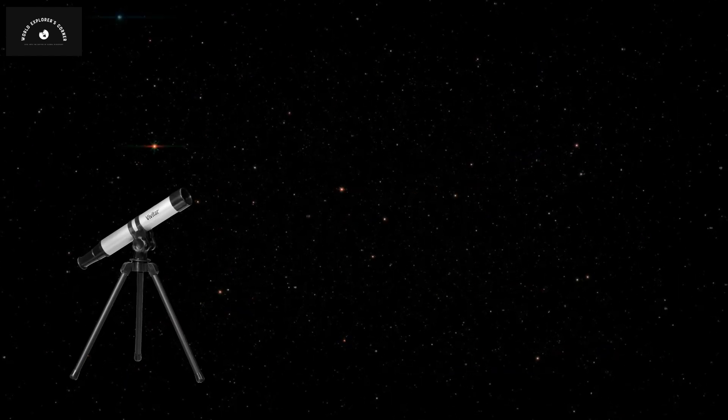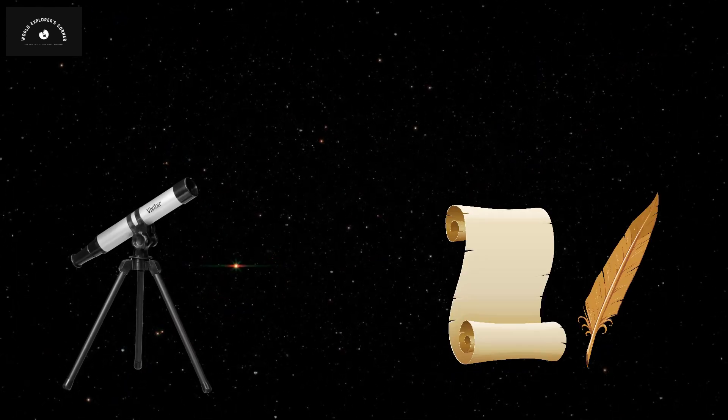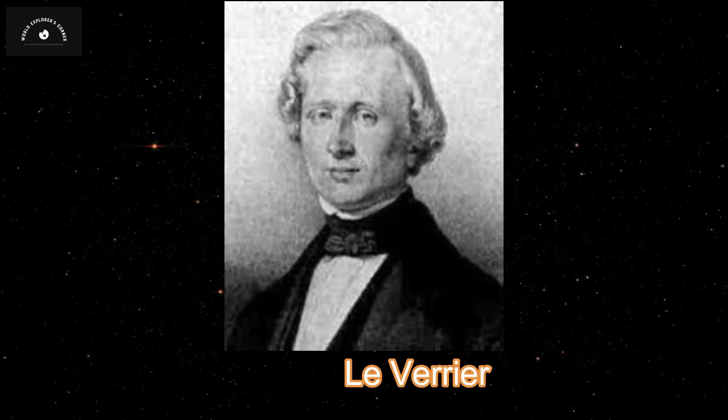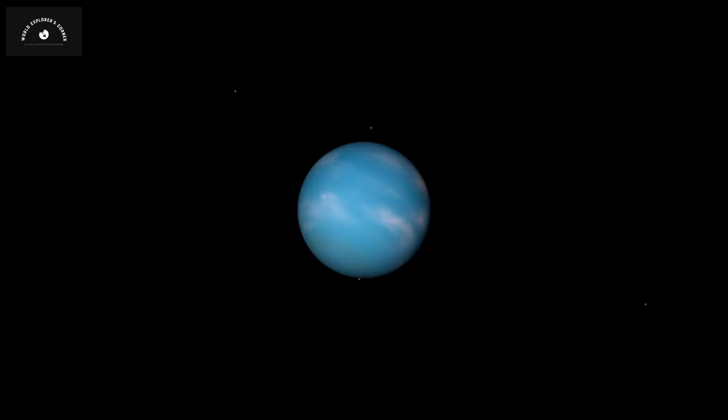Without the use of any telescope, a new planet was discovered with only pen and paper. 175 years ago, the French astronomer Urbain Le Verrier presented his findings and amazed the entire scientific community.